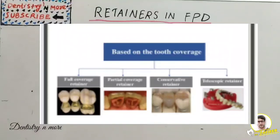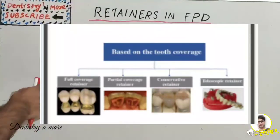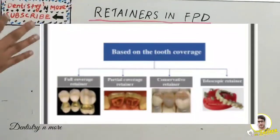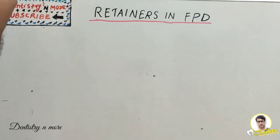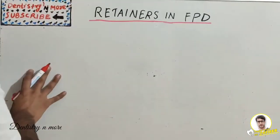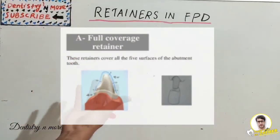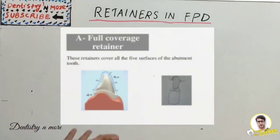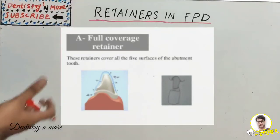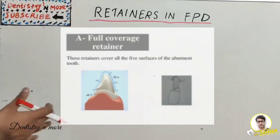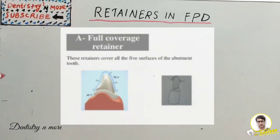The full coverage retainer covers all five surfaces of the abutment teeth: mesial, distal, buccal or labial, lingual or palatal, and incisal or occlusal. The advantages of full coverage retainers are that the contact area can be properly developed, embrasures can be enhanced, buccal contours can be correctly developed, and they facilitate occlusal plane modifications. They are indicated for endodontically treated abutments and ideal for restoring edentulous areas in patients with craniofacial abnormalities.